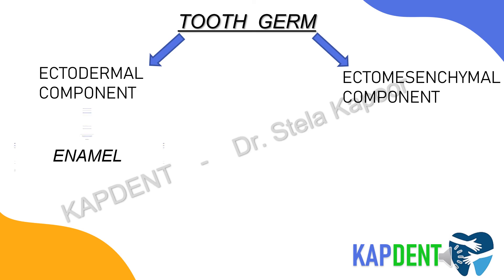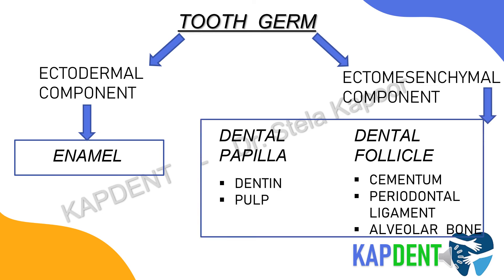The ectodermal component consists of the enamel organ, which forms the enamel. The ectomesenchymal component consists of the dental papilla and the dental follicle: the dental papilla forms the dentine and the pulp, while the dental follicle forms the cementum, periodontal ligament, and the alveolar bone.